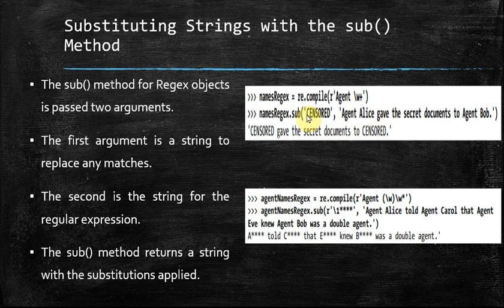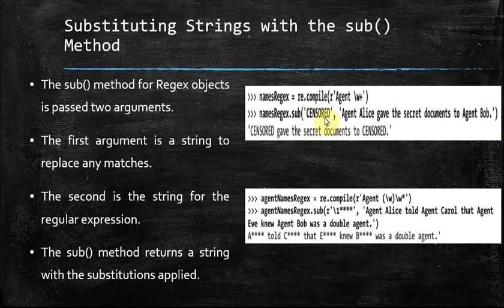Similarly, 'Agent Bob' — after 'agent' there is a space then 'b' matches \w and plus allows 'ob' — this entire match is also replaced by 'censored'. The result is: 'censored gave the secret documents to censored'. This is the usage of the substitute method.